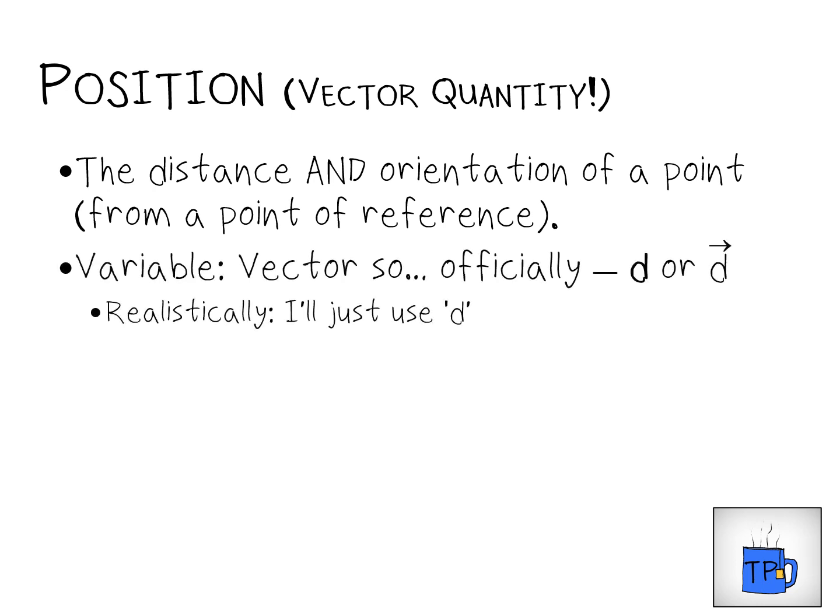For the variable, it's still the letter D. Officially, vectors should be written differently than scalars — textbooks will often make the D a bold letter, which often doesn't show up very cleanly, or put an arrow over the top of the letter, which indicates that variable is a vector quantity. I tend to just write the letter D for introductory physics purposes. It's not ideal, but it's a reasonable simplification, and we're still talking about the same unit, which is meters for distance.